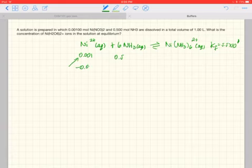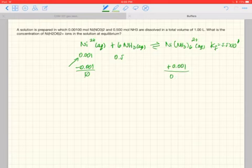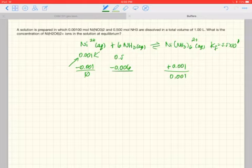So we want to take away that, add the product, so all of that nickel goes away and forms nickel-hexa-ammonium complex. Now, 6 times this value is 0.006, so a small amount of the ammonia is going to be reacted, and we get a value of 0.494.